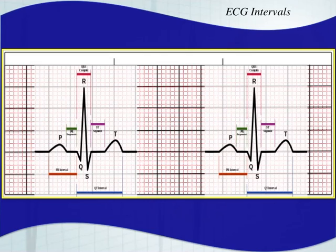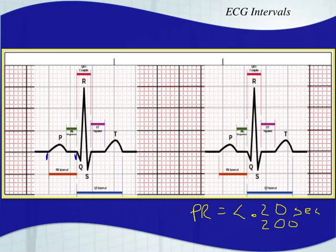You also have your PR interval. The PR interval is the P wave and the PR segment combined. It's important to remember that a normal PR interval is less than 0.20 seconds, or 200 milliseconds — they both stand for the same thing. That's equal to five small boxes or one large box. So it's important to remember the PR interval should be less than 0.20 seconds.